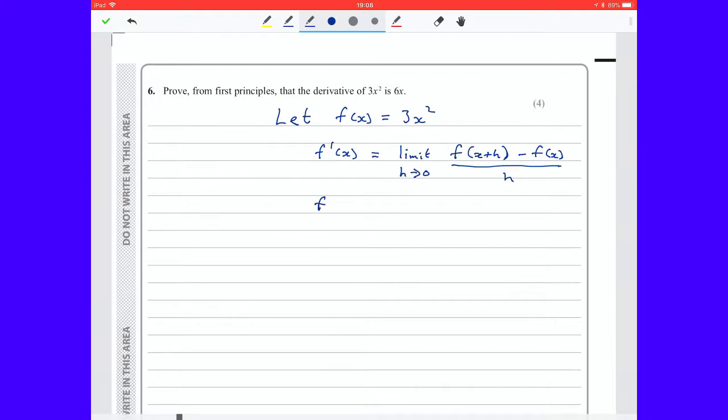And the next line, it's the limit as h tends to 0. Now f(x+h), we're putting x plus h in instead of x in the function. So we've got 3(x+h) squared. And then we're subtracting f(x), which is just 3x squared, all divided by h.